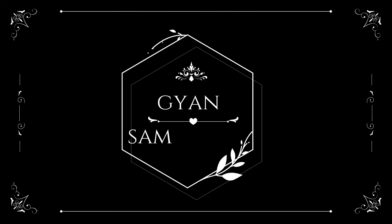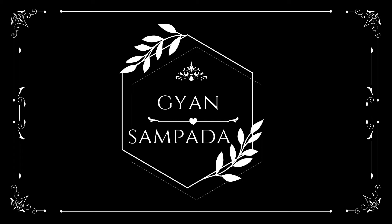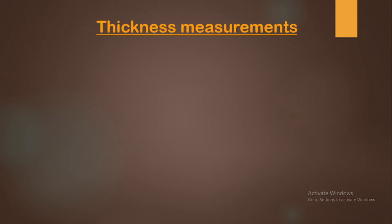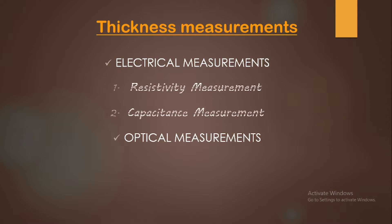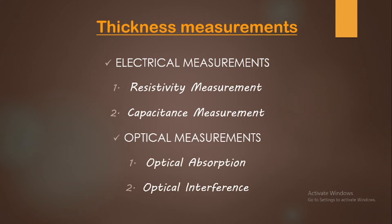Hello everyone and welcome back to my channel Gyan Sampada. In our previous classes we were discussing about how to find out the thickness of any given thin film. Under thickness measurements we saw two techniques: electrical and optical. Under electrical measurements we covered resistivity and capacitance measurement. Under optical measurements we covered optical absorption method, and today we are going to discuss the optical interference method.